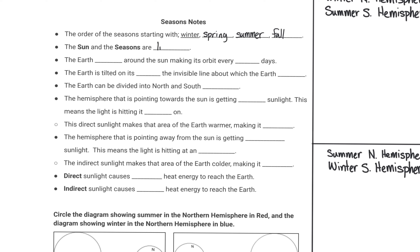The Sun and the Seasons are linked. The seasons are caused by the sun and also the tilt of the earth. The earth orbits around the sun, making its orbit every about 365 days — we know it's a little bit more than that, close to a quarter more. The earth is tilted on its axis, and the axis is the invisible line about which the earth rotates.